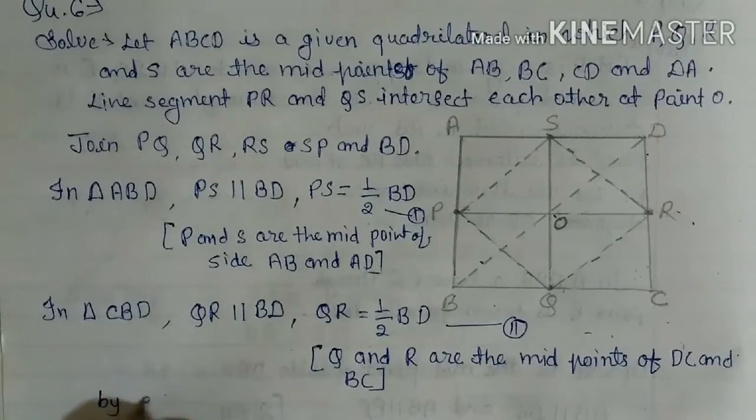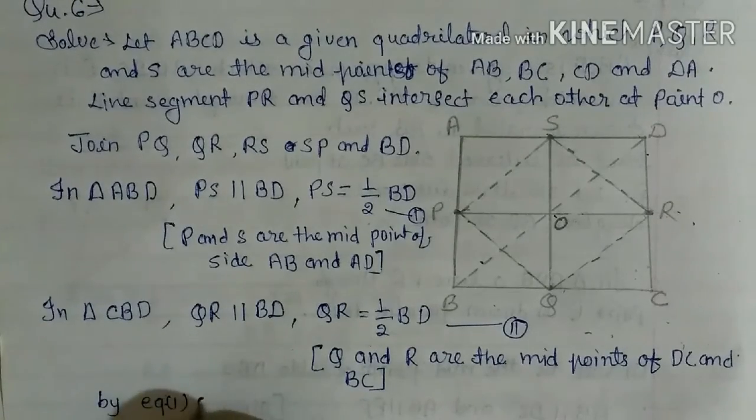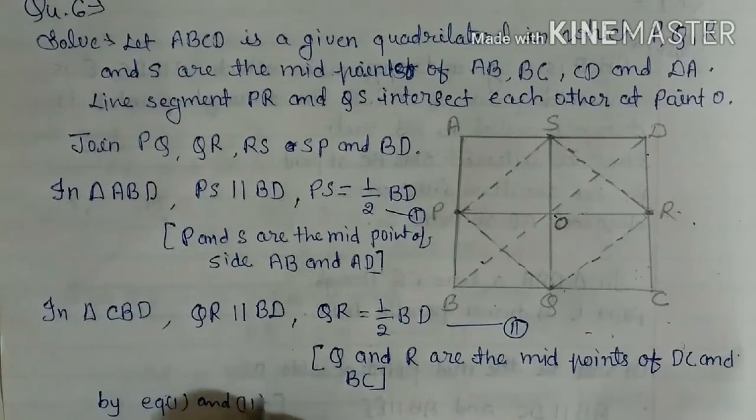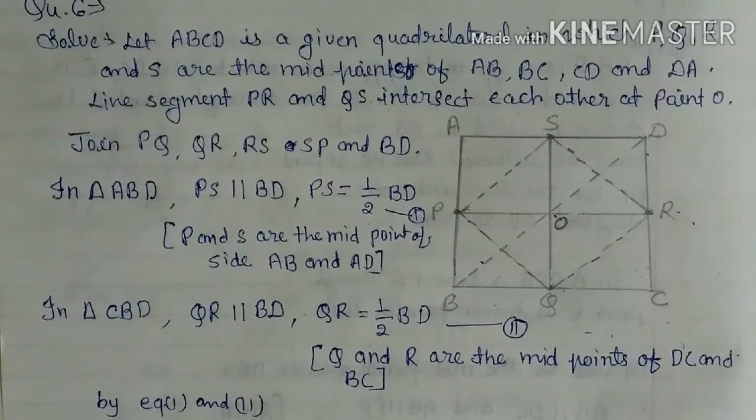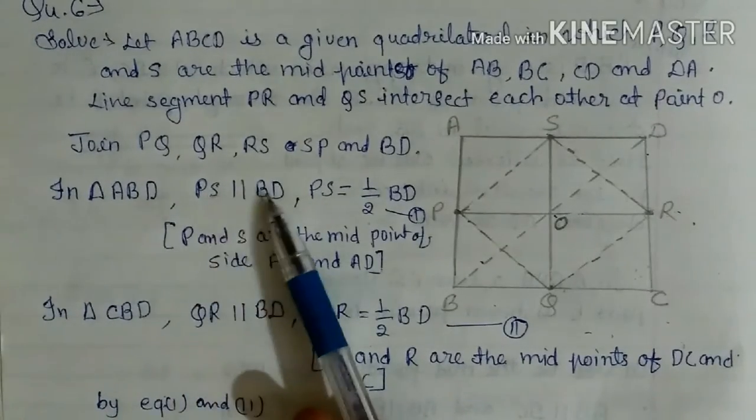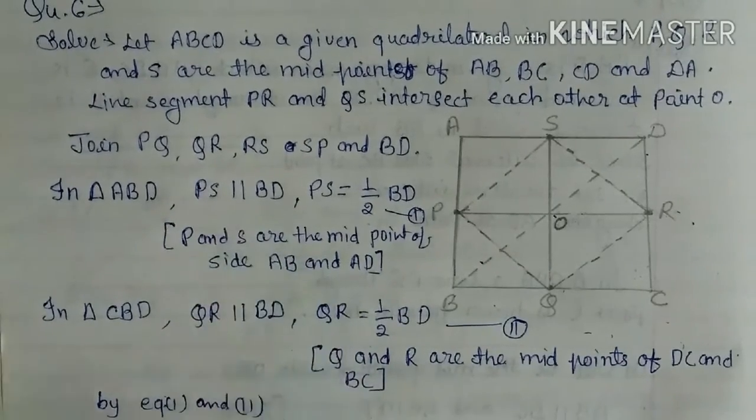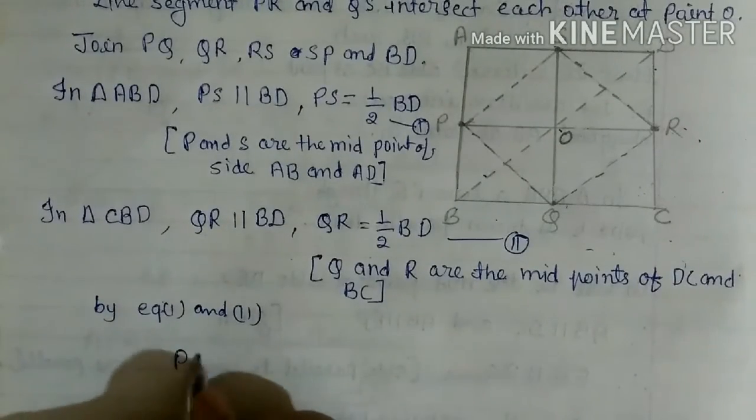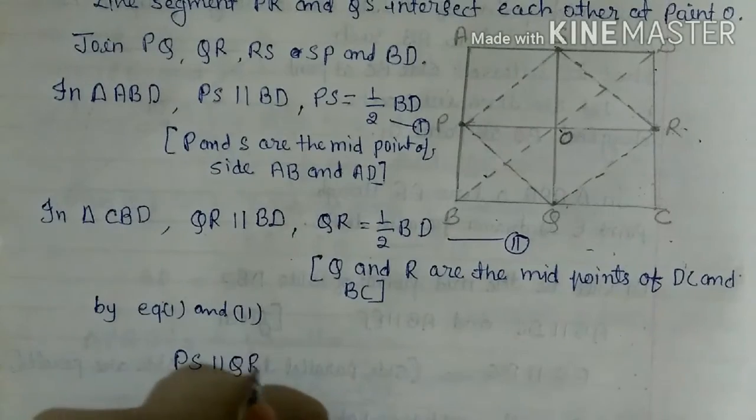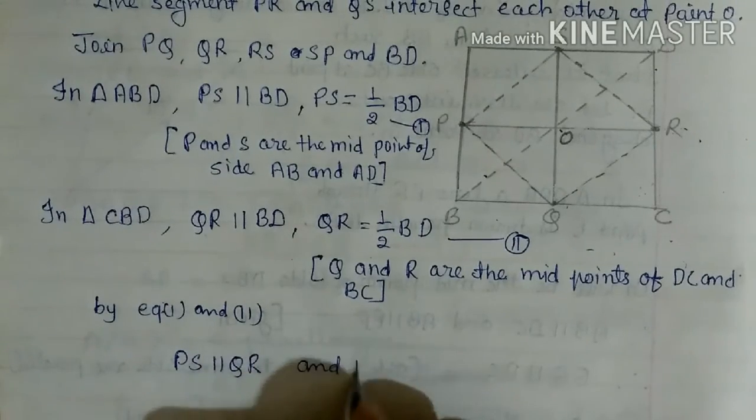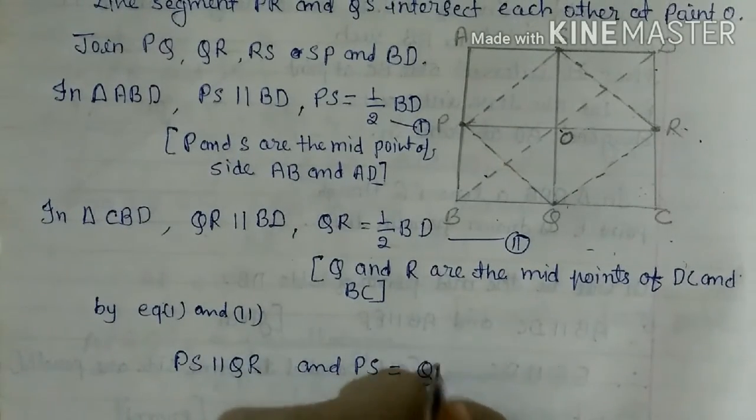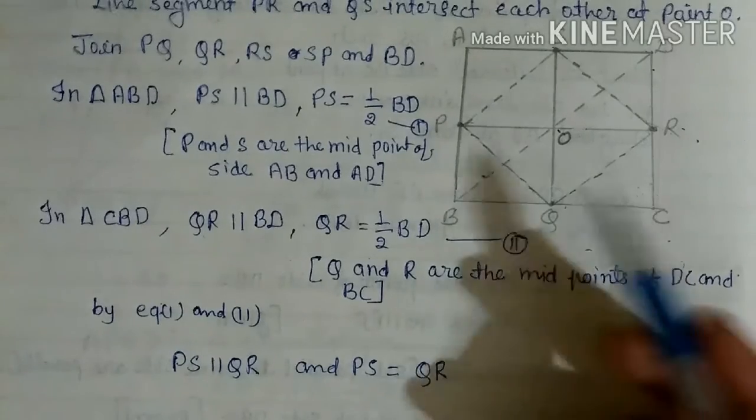By equation 1 and 2, here you see PS is parallel to BD and here QR is also parallel to BD, so these two are also parallel to each other. PS parallel QR.